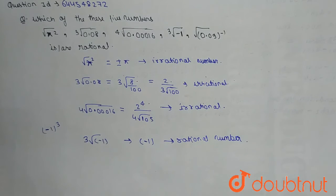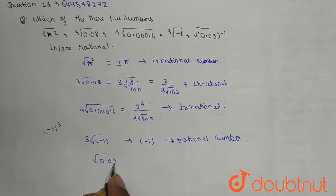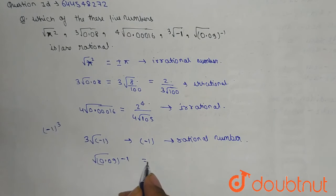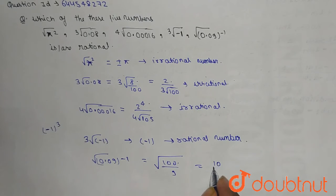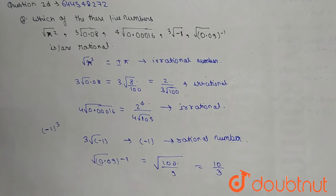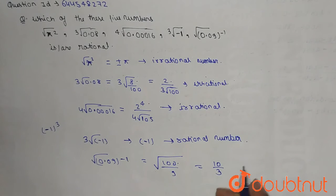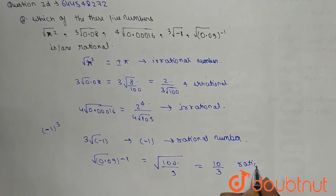Now we check for the square root of 0.09 to the power of minus 1. We can write this as the square root of 100 by 9, which equals 10 by 3. As we can see, this is in the form of P by Q.